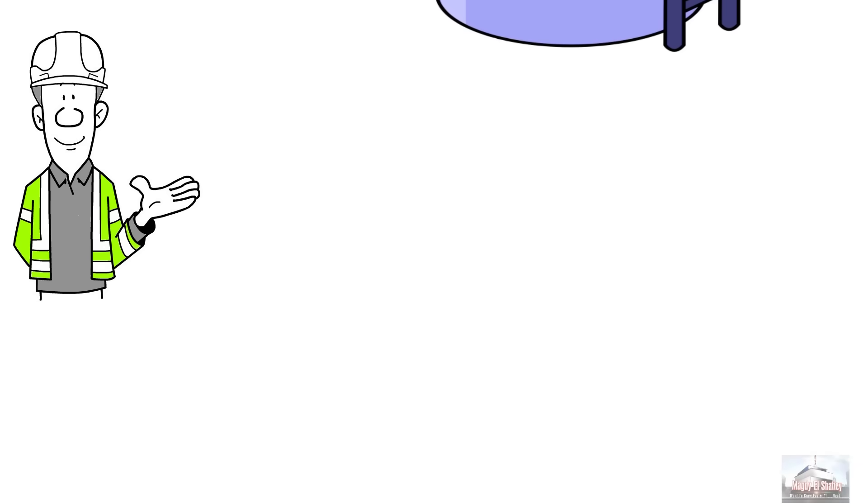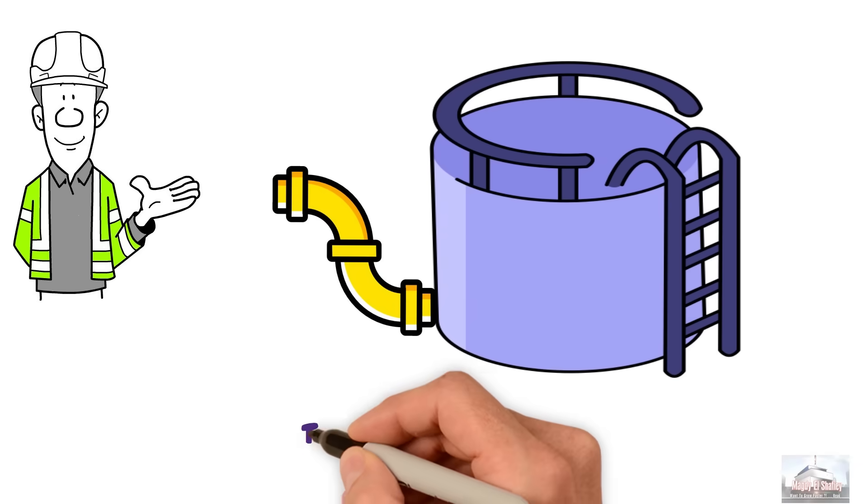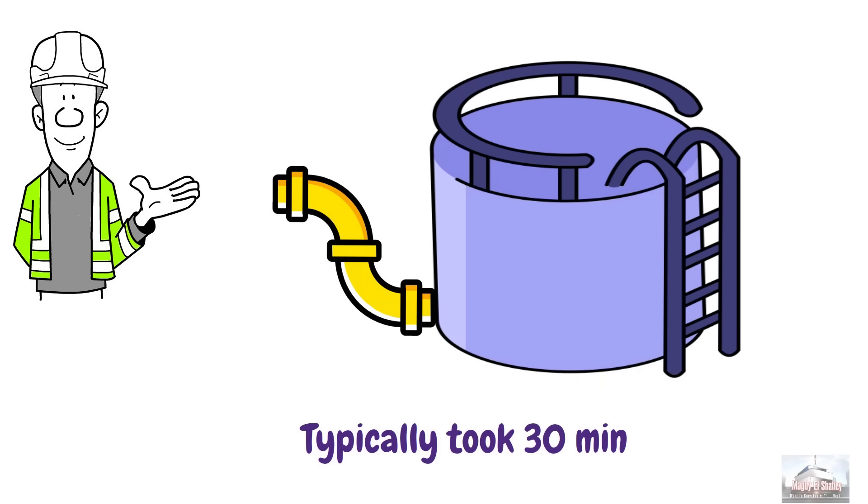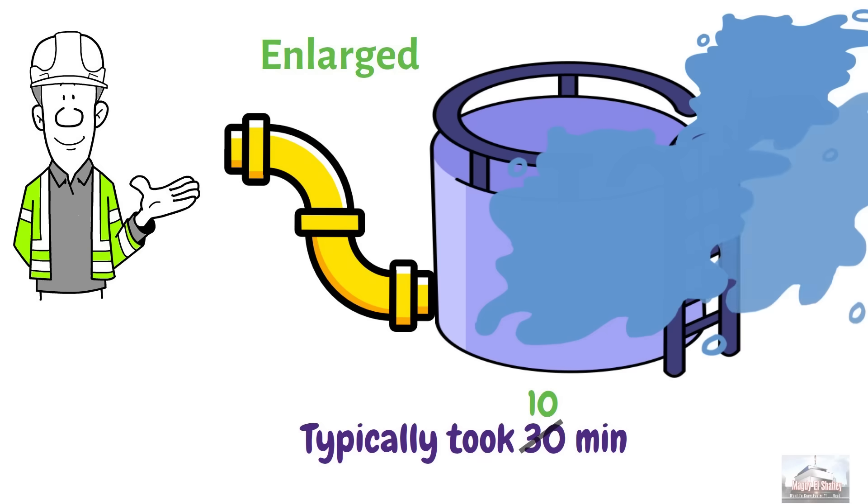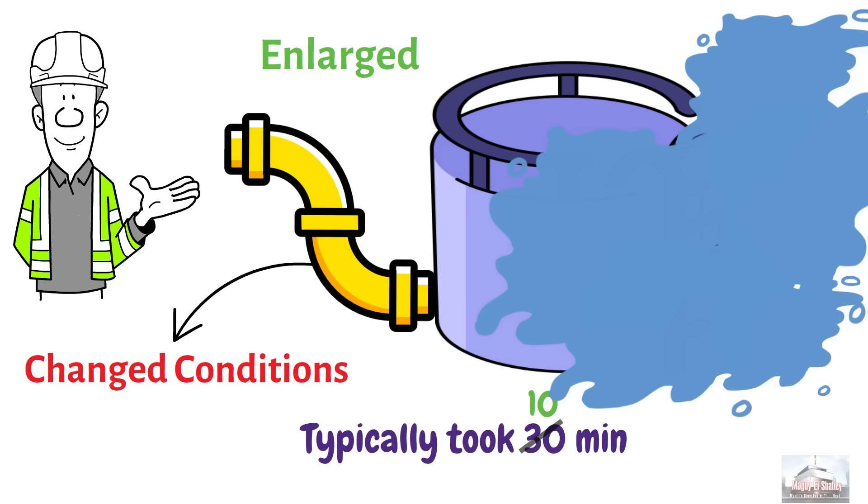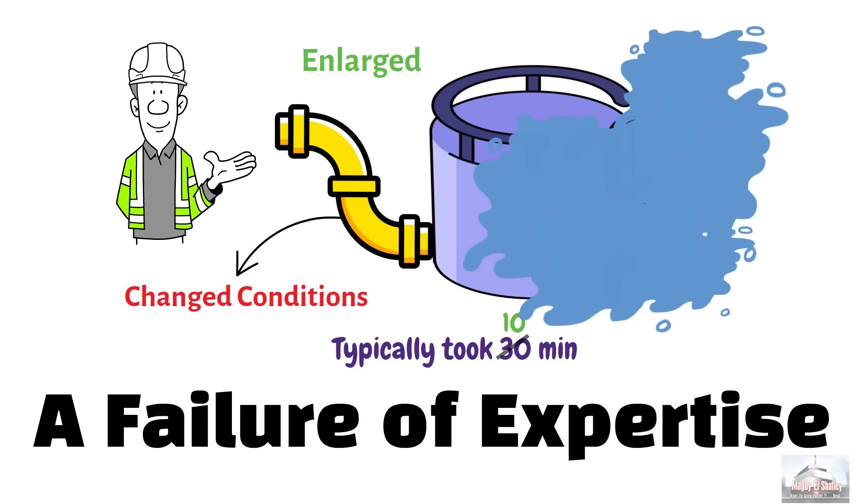Imagine an operator who was highly experienced in filling tanks and knew that the filling process typically took about 30 minutes. However, on this occasion, the diameter of the pipe entering the tank had been enlarged, causing the tank to fill much more rapidly than expected. The operator continued with the usual 30-minute procedure, and the tank overflowed. The operator applied a rule that was appropriate for a smaller pipe, but failed in this case due to the changed conditions. This demonstrates a failure of expertise, as the operator relied on a familiar rule without adapting to the new situation.